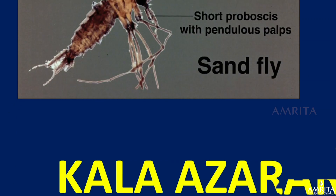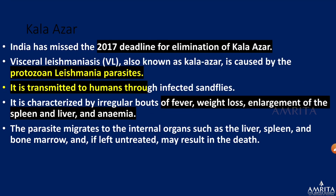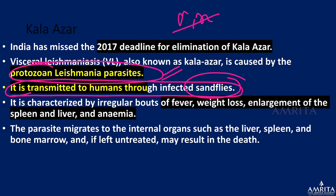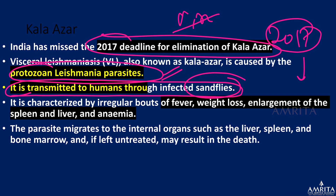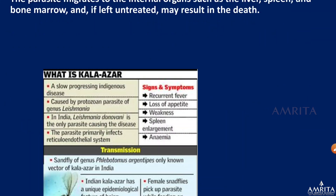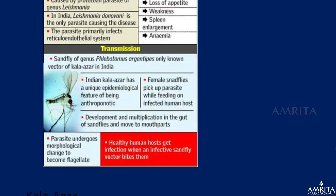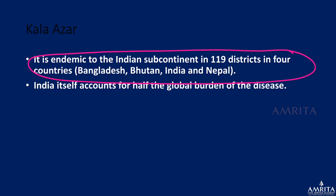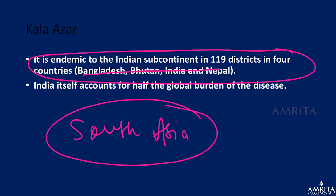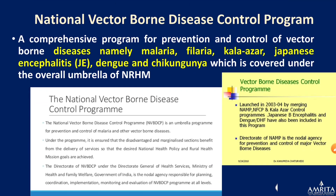Kala-azar is transmitted by sand flies. The causative agent is not a virus or bacteria but a protozoan parasite — Leishmania — transmitted to humans through infected sand flies. India set a 2017 deadline for elimination of kala-azar but was unable to meet it. Symptoms include enlargement of the liver and spleen, and severe anemia. It is endemic to 119 districts across four South Asian countries, and India accounts for half the global burden.